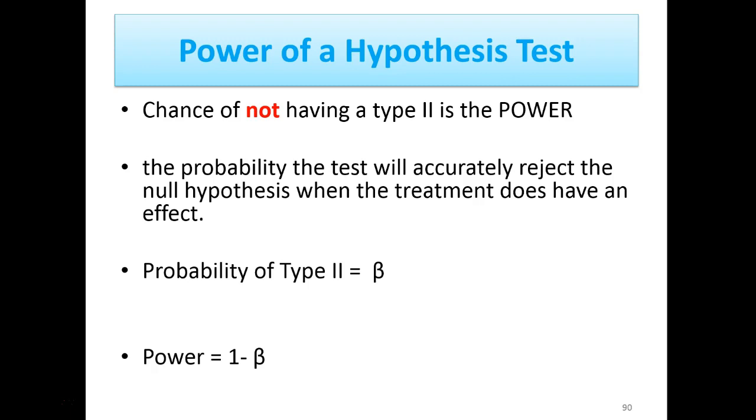Beta is a little bit different and a little more complicated. So what we always want to do with a Type II is we want to have the most power possible. Power is the chance of not having that error. So the probability of a Type II error is beta as we talked about. Here is that Greek letter.